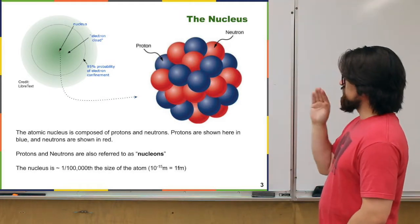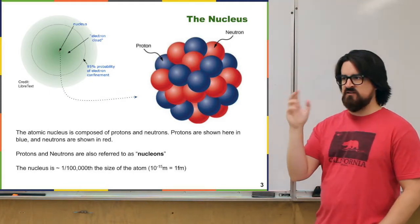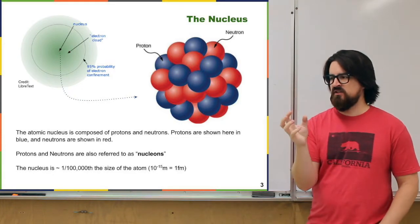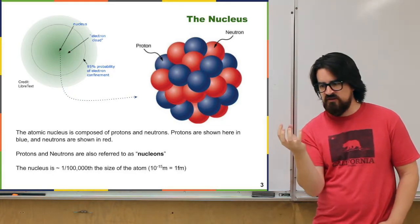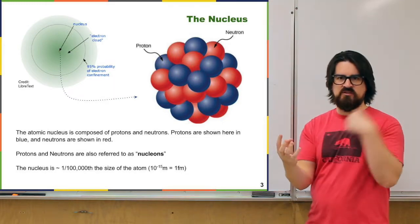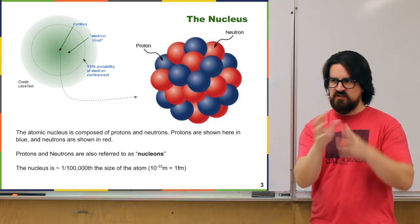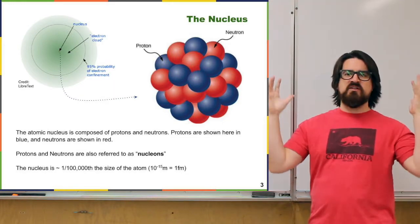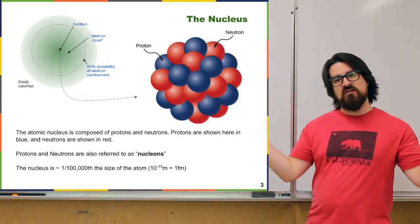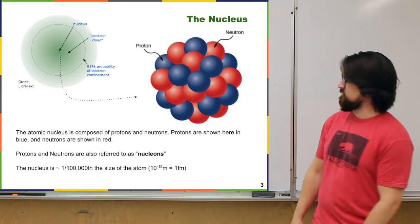The book has a nice analogy: if you think about the size of the nucleus, it's like thinking about the size of a baseball sitting inside a baseball stadium. The baseball itself is like the nucleus; the stadium is like the atom. That gives you an idea of the relative scale — very small.